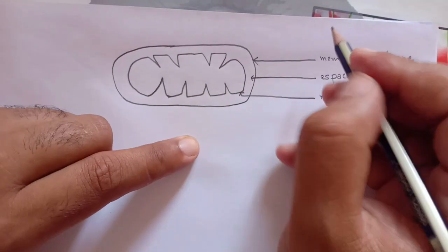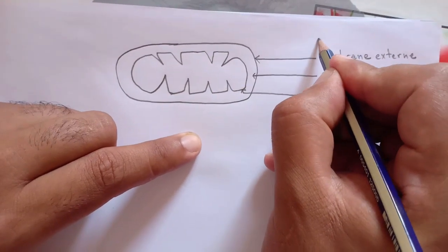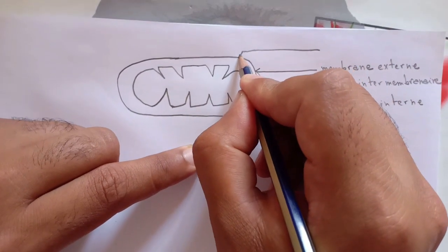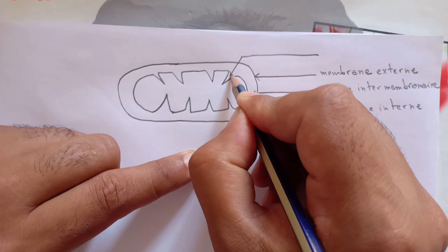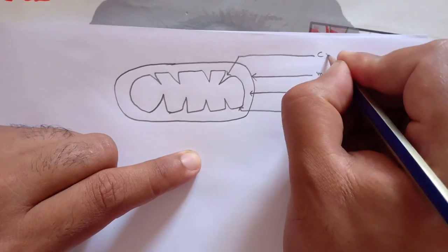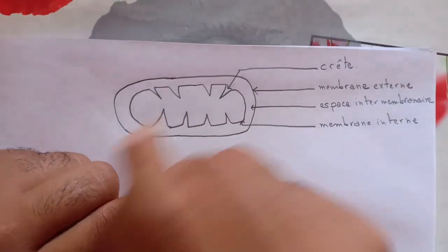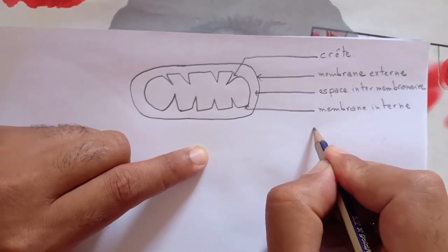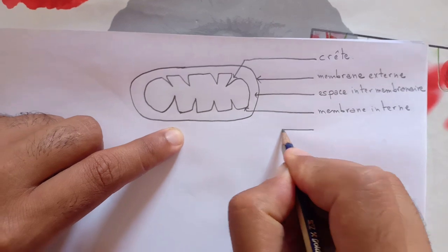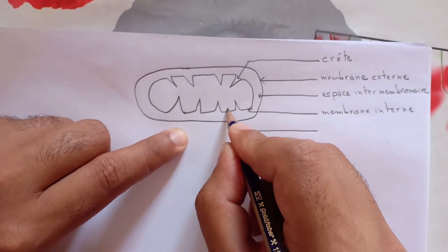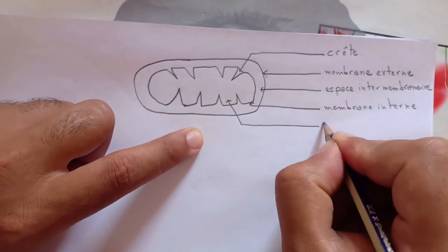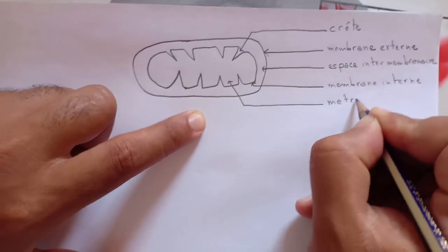Maintenant, on passe à l'élément suivant. Ça, ce sont les crêtes. Et enfin, la matrice. Ça, c'est la matrice. La matrice de la mitochondrie.